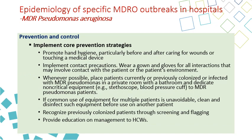Prevention involves contact transmission prevention as usual, plus prevention of waterborne outbreaks. For contact transmission: promote hand hygiene, implement contact isolation or precautions. Whenever possible, place the patient in a single room with a private bathroom and dedicated non-critical equipment. If common use equipment is unavoidable, clean and disinfect between patients, recognize previously colonized patients and flag them in the system, and provide education for healthcare workers.